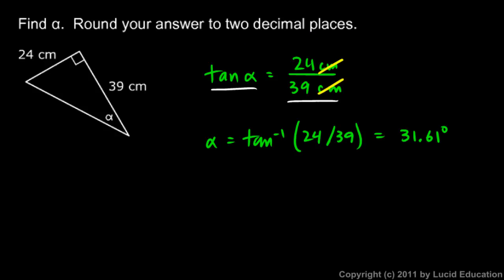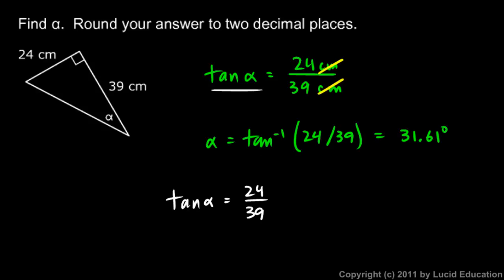Let me show one other approach. Going back to: tangent of alpha equals 24 over 39. If you're having trouble getting from that step to the answer, think of it this way — here's an equation, and we can do whatever we want as long as we do the same thing to each side.